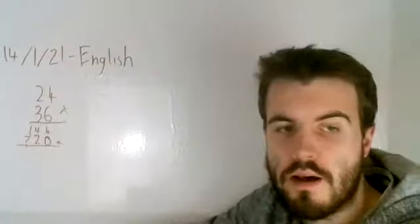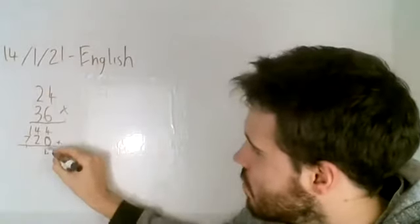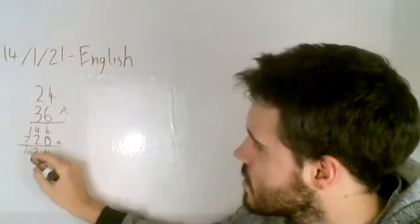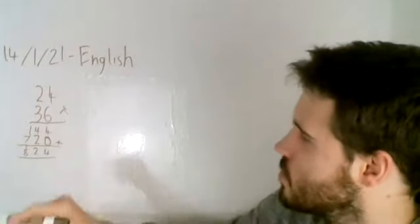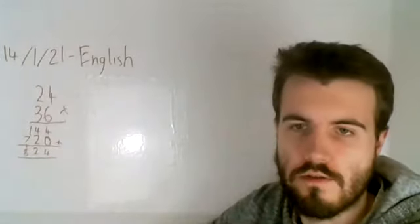Now I need to add these two numbers up, so I've got four and zero is four, four and two is six, one and seven is eight, so my answer should be eight hundred and sixty-four.